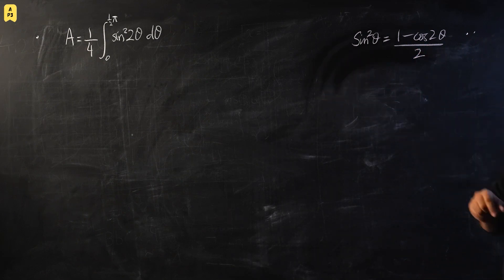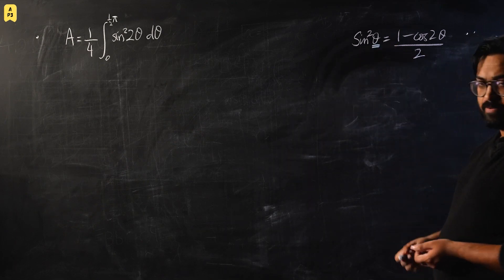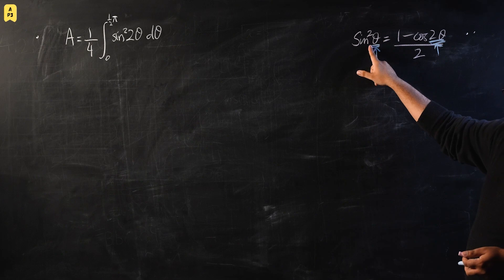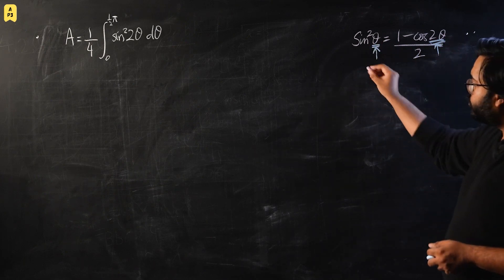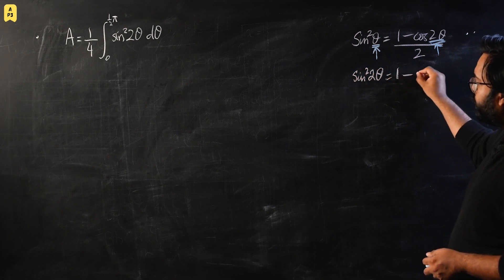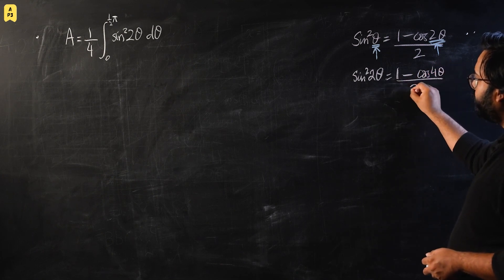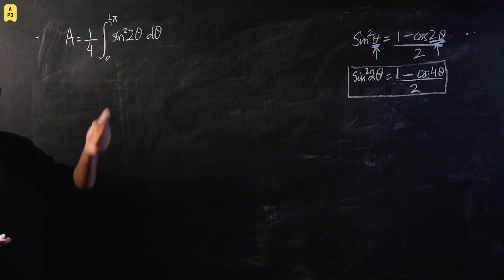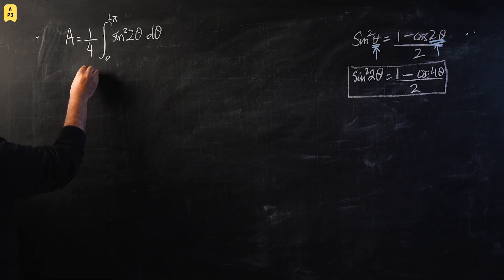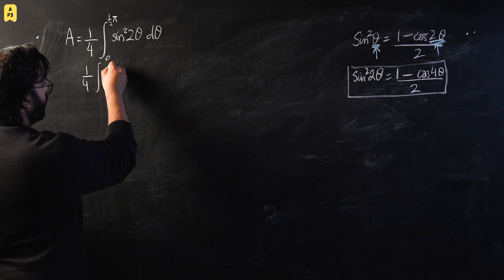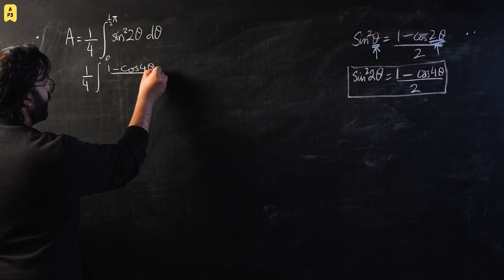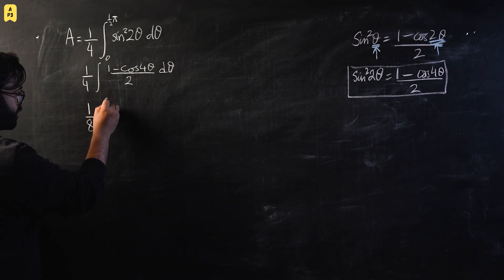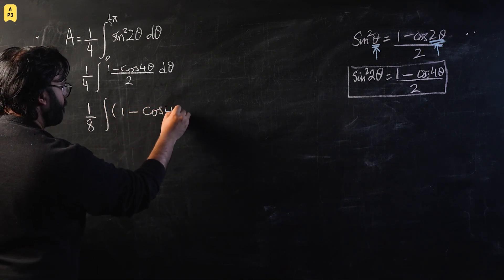Using this substitution, the integral becomes one-quarter times the integral of (1 minus cos 4theta) over 2 dθ, which equals one-eighth times the integral of (1 minus cos 4theta) dθ. Integrating separately: the integral of 1 is theta, and for cos 4theta we introduce a factor of 4 and 1/4 to satisfy the chain rule, so it integrates to (1/4) sine 4theta. The result is one-eighth times [theta minus (1/4) sine 4theta].